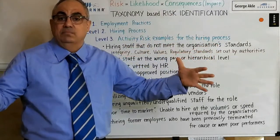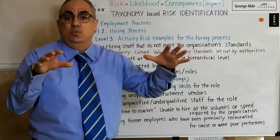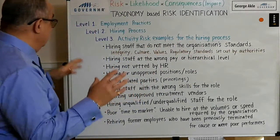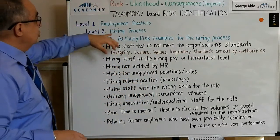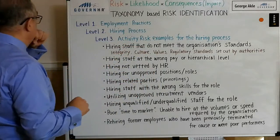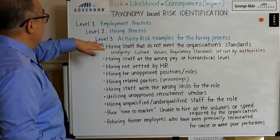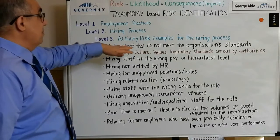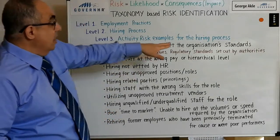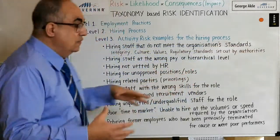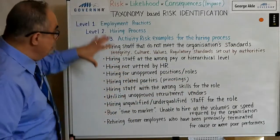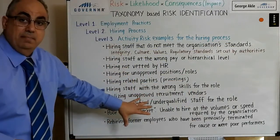Level two is the hiring process — that's the branch off the trunk. Then we look at level three, which was the activity risk examples, and we're talking here about the hiring process. Let's go through some of these risk examples.